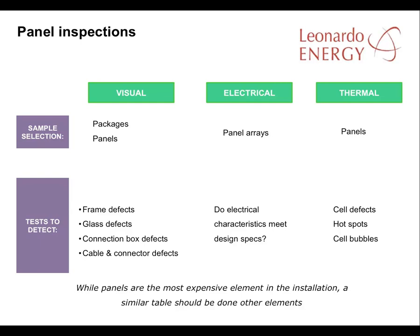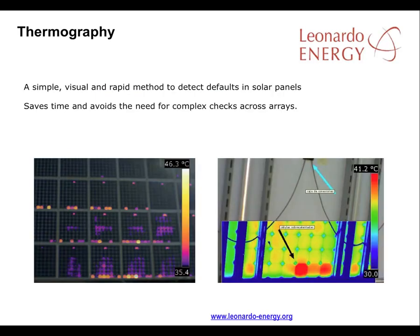The electrical inspection tests whether the panel array's characteristics differ from the technical specifications used for the design, while the thermal inspection of panels searches for cell defects, hot spots, or cell bubbles. Thermal inspection of the modules is a simple method to detect faults in the solar panels. The check is a rapid and visual one using a special kind of camera that highlights thermal hot spots in the panels which might indicate a defect. The picture on the right shows you what defects might look like, with the affected cells highlighted in red.